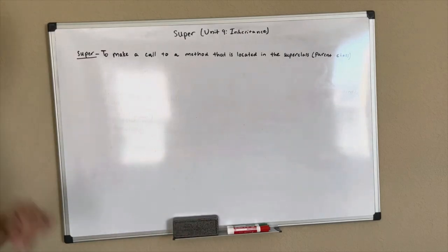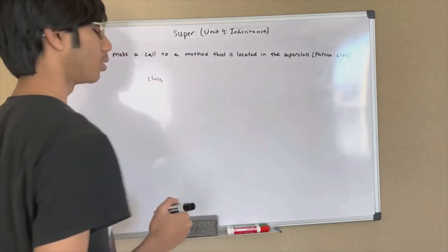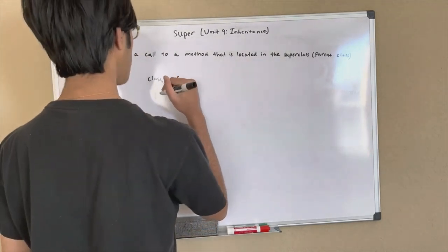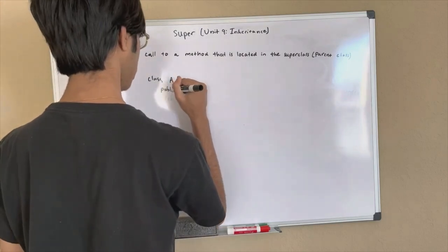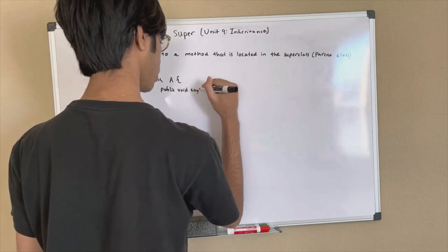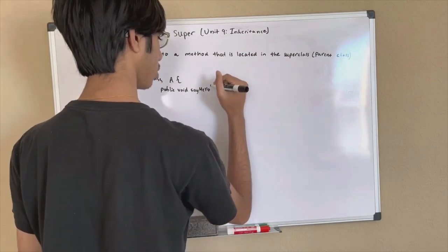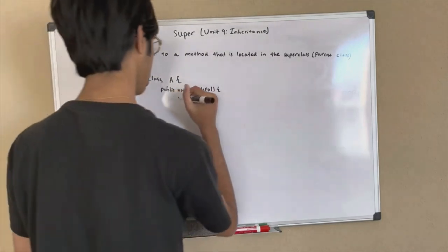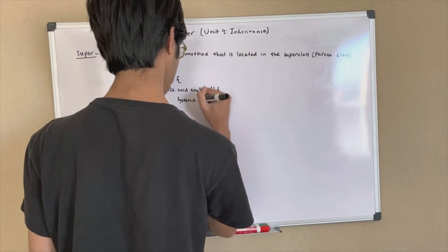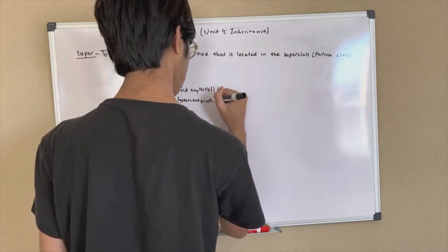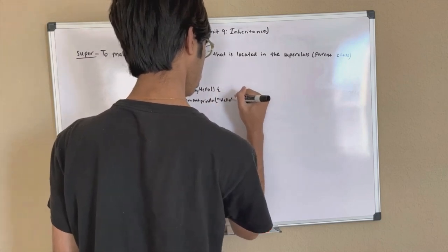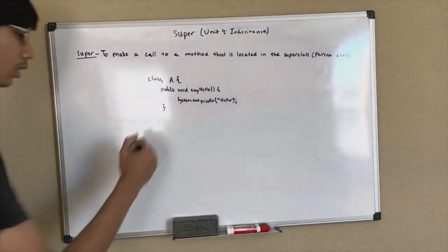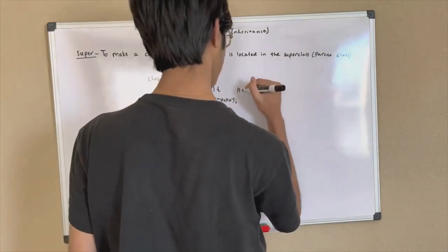Let's go ahead and demonstrate this. I have a class and I'm going to call it A. Let's say that I have a method in my class. I'm going to call it SayHello. It's not going to take in any parameters, and what it's going to do is just print. This right here is what I'm going to call our super class.